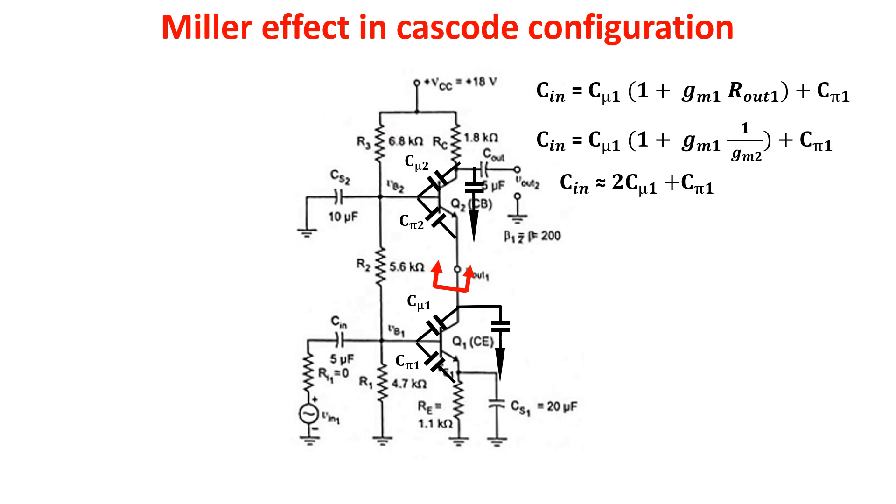The common base configuration Q2 doesn't have a capacitance between the input and the output, so we don't have magnification of capacitances.